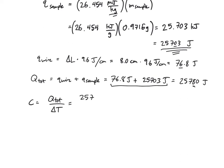25,780 joules divided by 2.52 Kelvin. That equals 10,230 joules per Kelvin, and that is the heat capacity for the bomb calorimeter as far as I measured it.